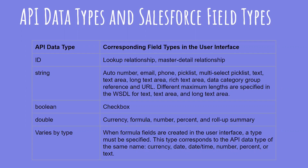Let's discuss API data types and Salesforce field types. Generally, API data types and field types in the user interface have the same name — for example, a date field is represented by a Date data type in the API. However, some field types are represented differently depending on whether you are inspecting an object via API or user interface. There are API types like ID, String, Boolean, and Double. Corresponding Salesforce fields include: for ID — record ID, lookup relationship, or master-detail; for String — auto number, email, phone number, picklist, multi-picklist, text, text area, and URL.